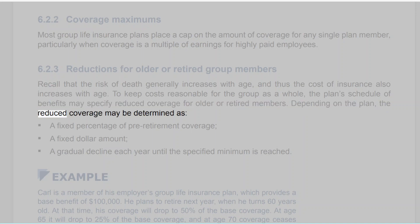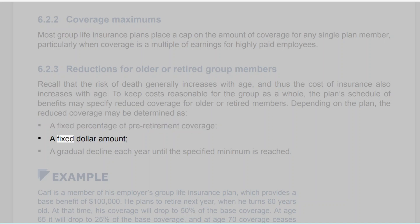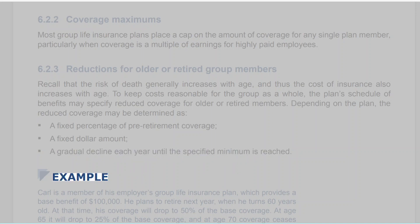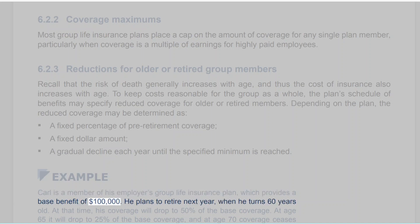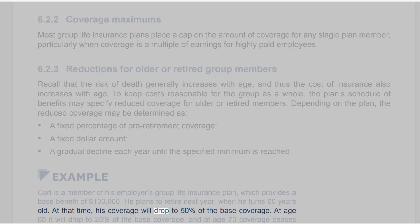Depending on the plan, the reduced coverage may be determined as a fixed percentage of pre-retirement coverage, a fixed dollar amount, or a gradual decline each year until the specified minimum is reached. Example: Carl is a member of his employer's group life insurance plan, which provides a base benefit of $100,000. He plans to retire next year at age 60, at which time his coverage will drop to 50% of the base coverage. At age 65 it will drop to 25%, and at age 70 coverage ceases completely.